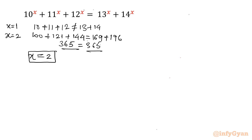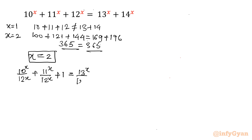How many other solutions are there? We have to find that out. We will divide the complete equation by 12^x. That gives (10/12)^x + (11/12)^x + 1 = (13/12)^x + (14/12)^x, using the exponent rule that a^x / b^x = (a/b)^x.